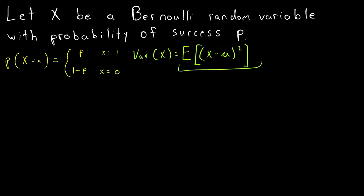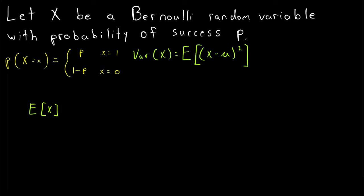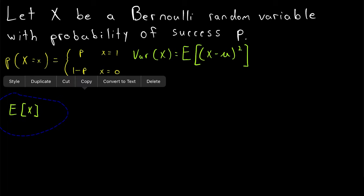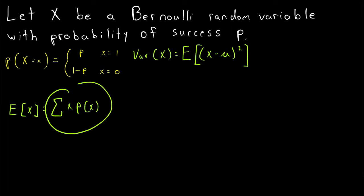If you want a quick recap of expected value: remember, mu is the expected value of x, so let's quickly calculate that before we calculate the variance. The expected value of x is the probability-weighted sum of the possible values of x — we take each possible value, multiply it by its probability of occurring, and add them up.